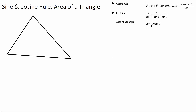So this is my blank triangle here. Let's say this angle here was 55 degrees, and this one here was 48 degrees. We knew this side length here was 12 centimetres, and we want to find this side length here, x. We are given two angles and one side length, and we want to find the other side length. If we have two angles and a side length and we want to find another side length, we need to use the sine rule.